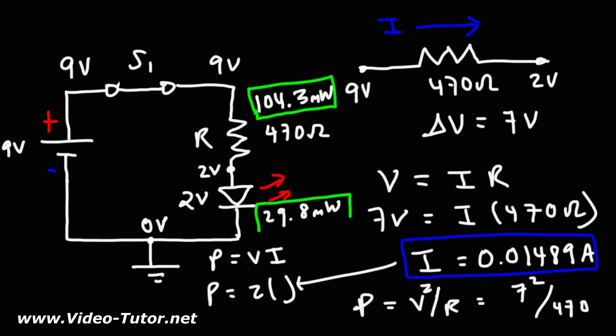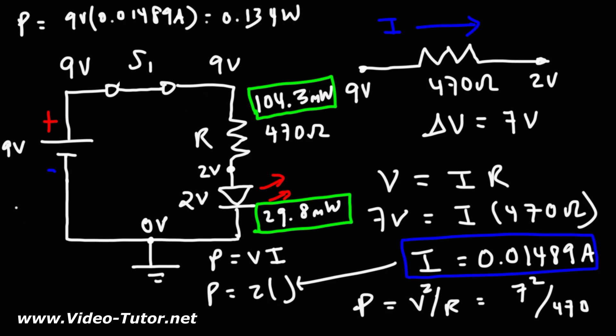Now let's calculate the power delivered by the battery. Using P = V × I, we have a 9 volt battery multiplied by the current of 0.01489 amps, giving approximately 0.134 watts, or 134 milliwatts. Notice that the power delivered by the battery is equal to the sum of the power being dissipated by the resistor and the LED. This makes sense because energy must be conserved — the rate at which energy is delivered from the battery is equal to the rate at which energy is being consumed by the resistor and the LED.